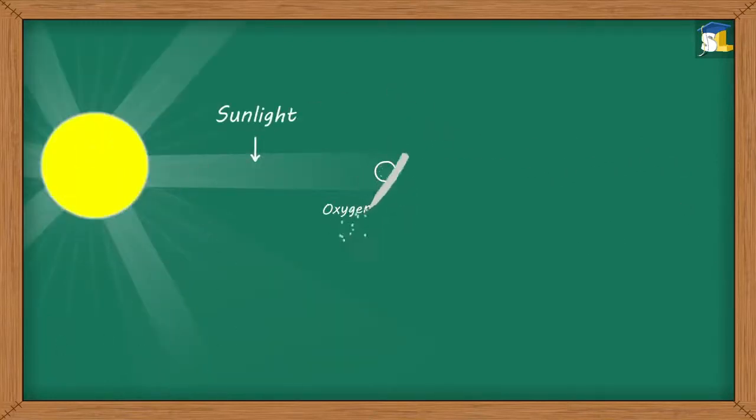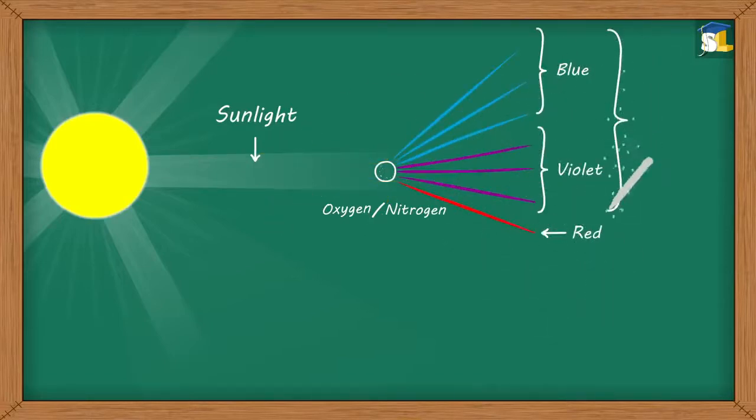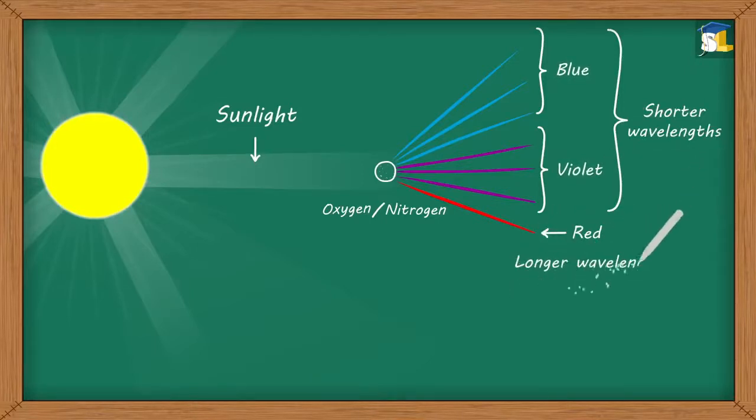However, when sunlight strikes particles of oxygen and nitrogen, which are smaller than the wavelength of sunlight, the colors of sunlight having shorter wavelengths, that is, blue and violet, are much more scattered than colors having longer wavelengths.